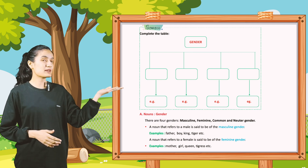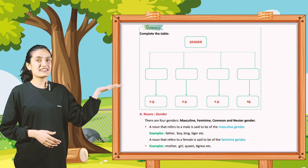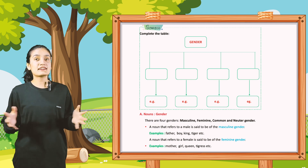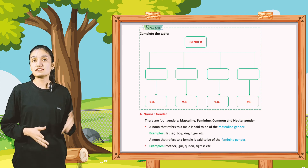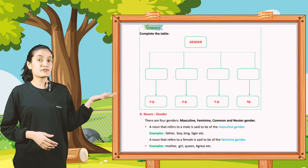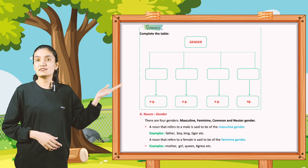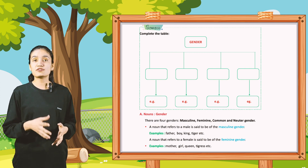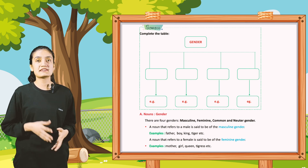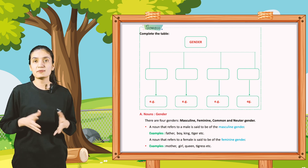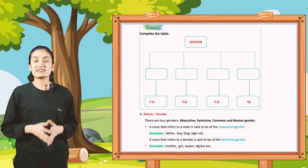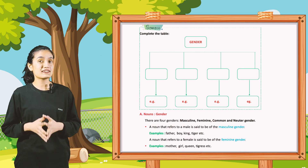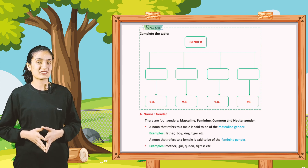Now let's begin part A: nouns, gender. There are 4 genders: masculine, feminine, common and neuter gender. A noun that refers to a male is said to be of the masculine gender. Examples: father, boy, king, tiger, etc.